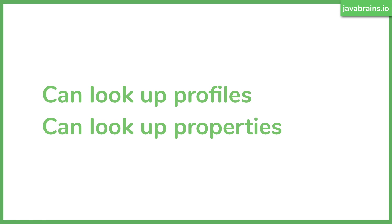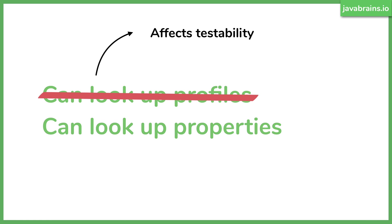Basically you can look up profiles and you can look up properties. But let me tell you — this is a bad idea. You should not look up profiles using this, because it affects testability. Let's say you have code that says: if the environment is test, do this; if the environment is prod, do something else — but how do you test that? It's hard, you cannot do that. So you should not look up profiles to do business logic based on the environment.